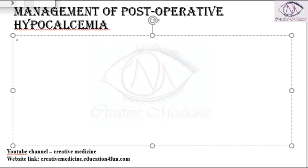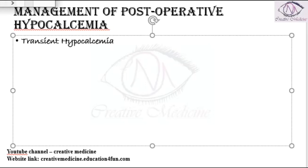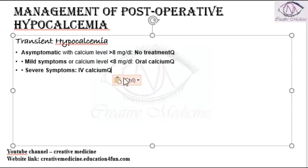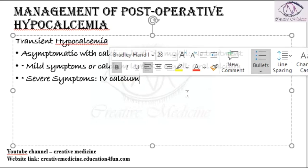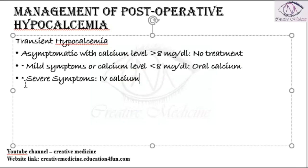Post-operative hypocalcemia can be divided into two types: it can be either transient hypocalcemia or prolonged hypocalcemia. In transient hypocalcemia, the hypocalcemia is present only for a short period of time and after that it disappears.